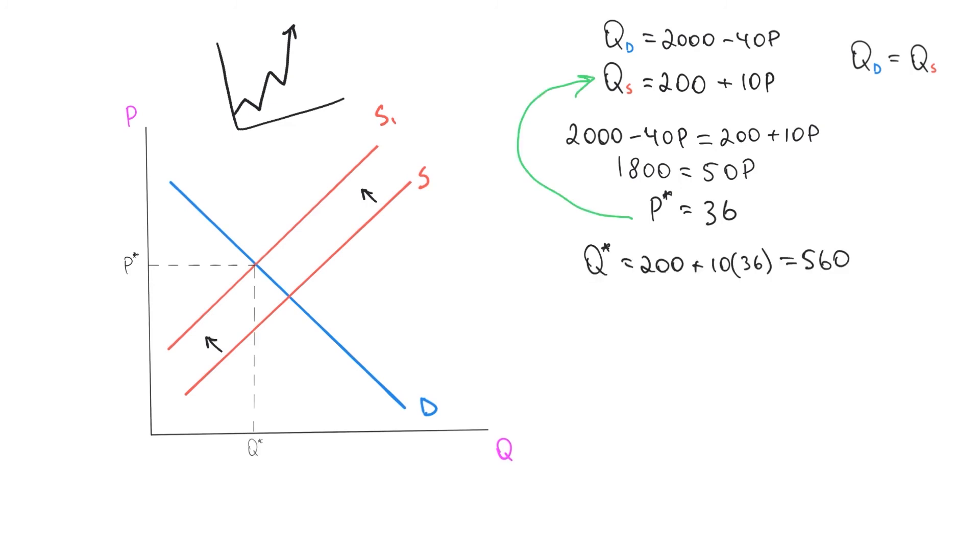So that means in this case, when supplies become more expensive, the optimal price becomes $36 and the optimal quantity becomes 560 units.